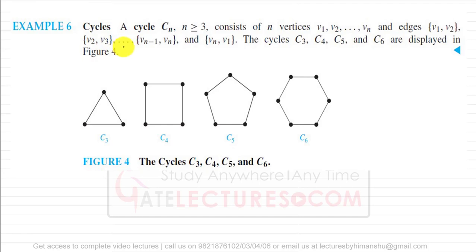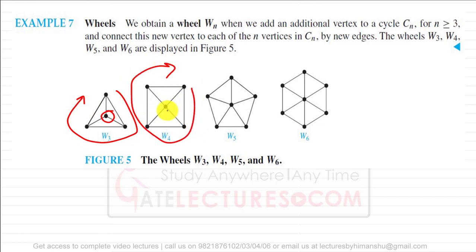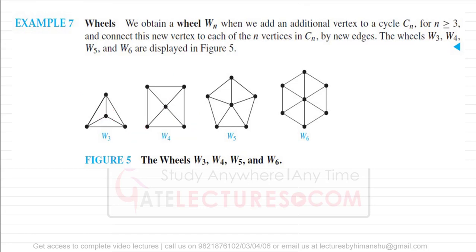A cycle Cₙ consists of n vertices v1 through vn with edges v1-v2, v2-v3, ..., v(n-1)-vn. A wheel is similar to a cycle but with one additional vertex in the middle connected to all cycle vertices.